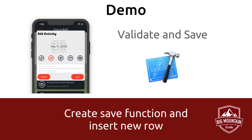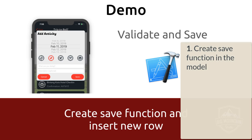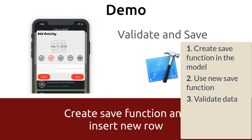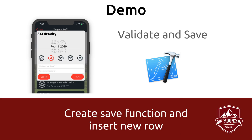We're just going to jump right in and create a save function in our model, then we're going to use that new save function to save a new activity. We're going to do some data validation to make sure we have all the data that we need. And then once that is done, we're going to show that new activity in the table view and make sure it falls under the correct day. Alright, so let's get started.